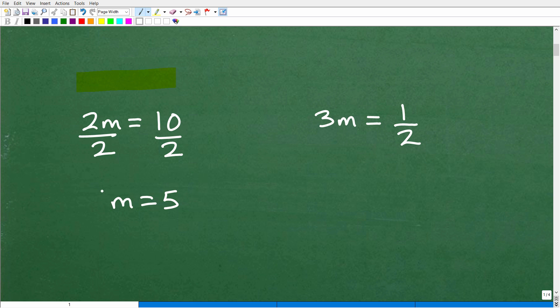Okay. Now, 2 divided by 2 is 1. So that would be 1m. But anytime you have a 1 in front of a variable, we don't need to write that. We just simply leave it like this. So m is equal to 5. And that is the solution to this equation here. So pretty straightforward.